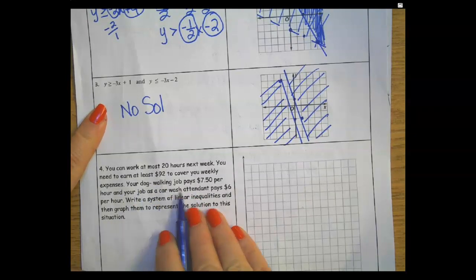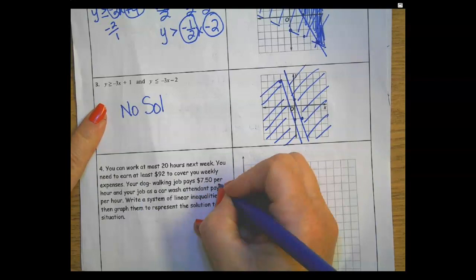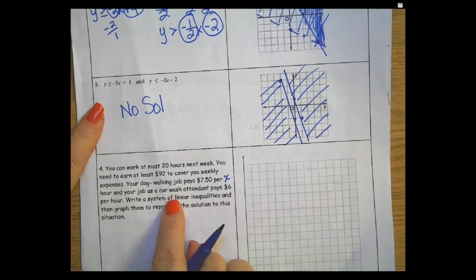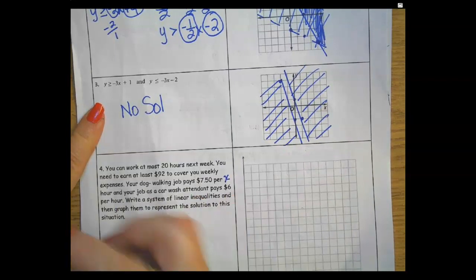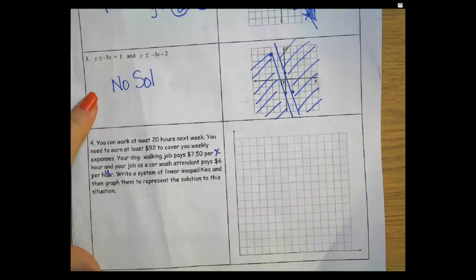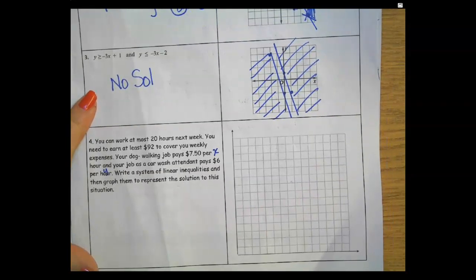You have your dog walking job that pays $7.50 per hour, so that's a variable per x. And your job as a car wash attendant pays $6 per y.